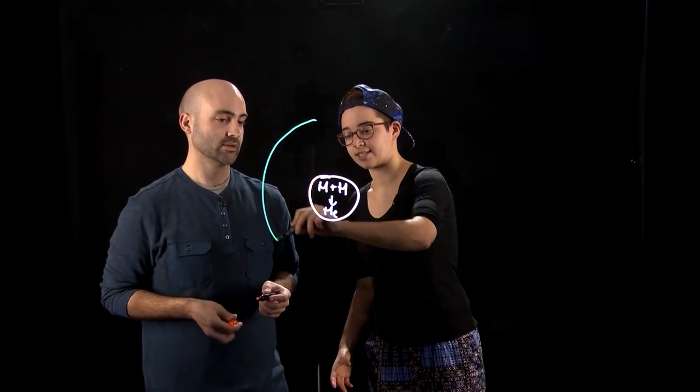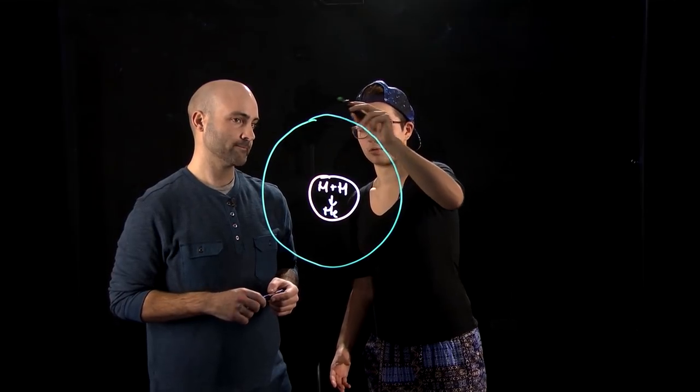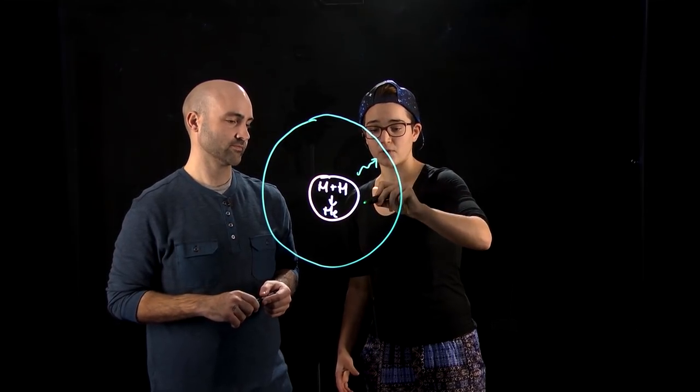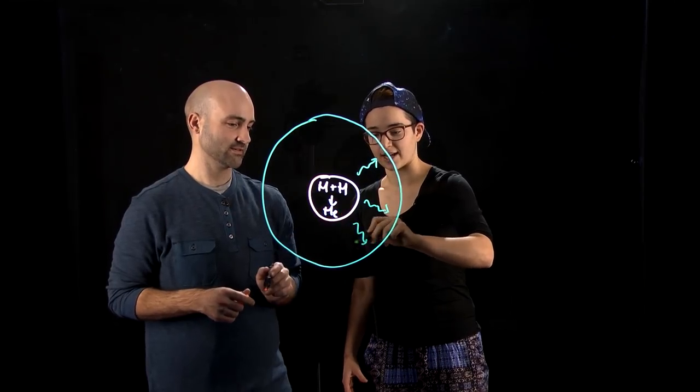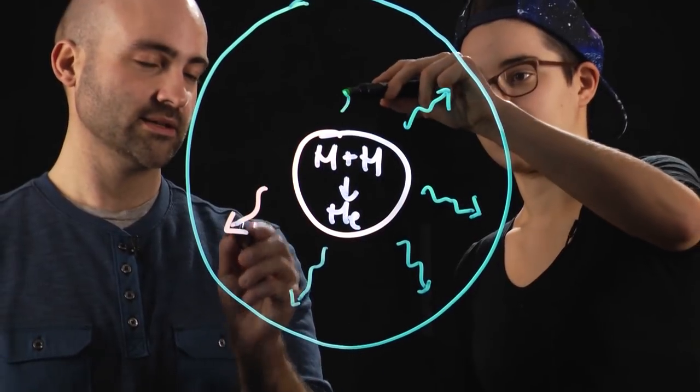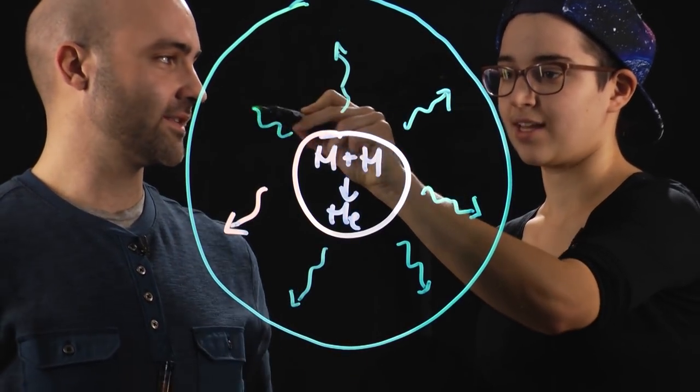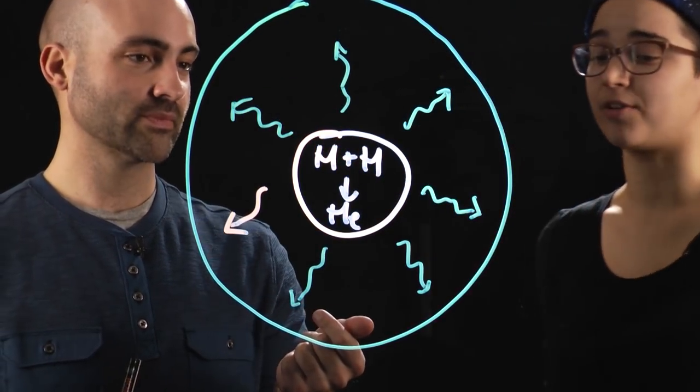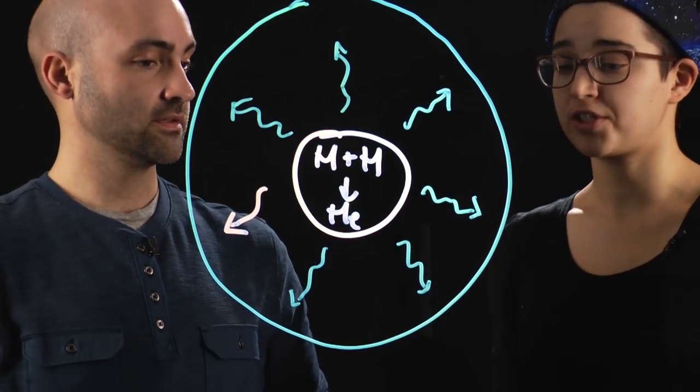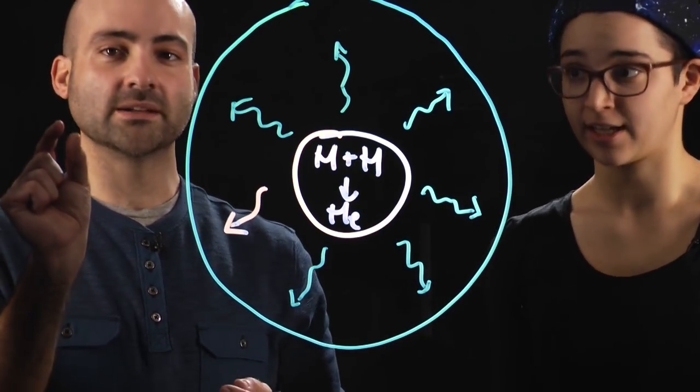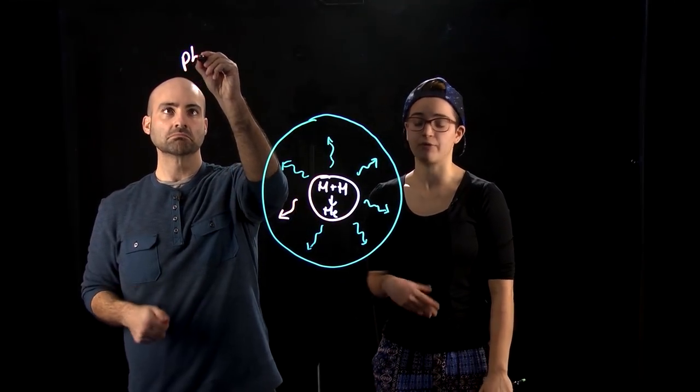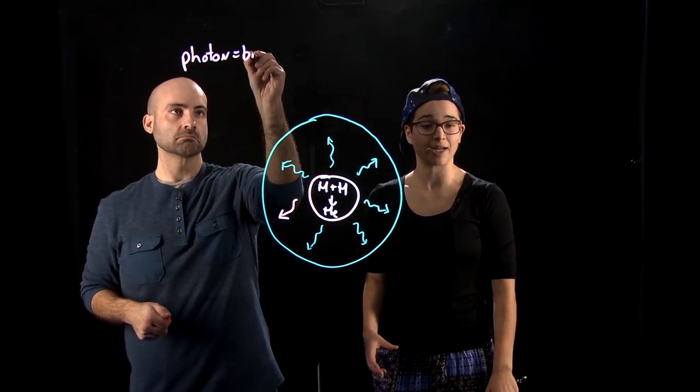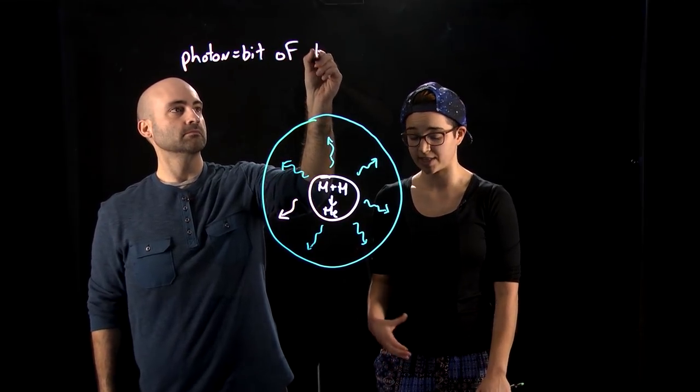That photon is gonna have to travel out of this core to continue to transport this energy. That's where the next layer of our Sun comes in: the radiative zone. We're gonna have these photons—these are the squiggly lines, the photons. Is it easy for these photons to get out of the core? Actually, it's extremely difficult. If this was a vacuum, it would only take a photon, which is just a small unit of light, a few seconds to travel this distance.